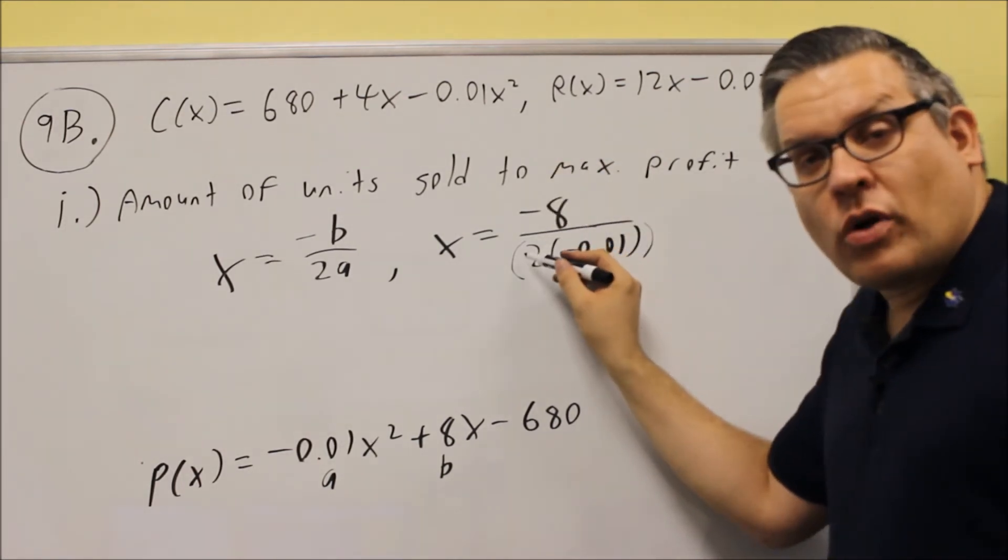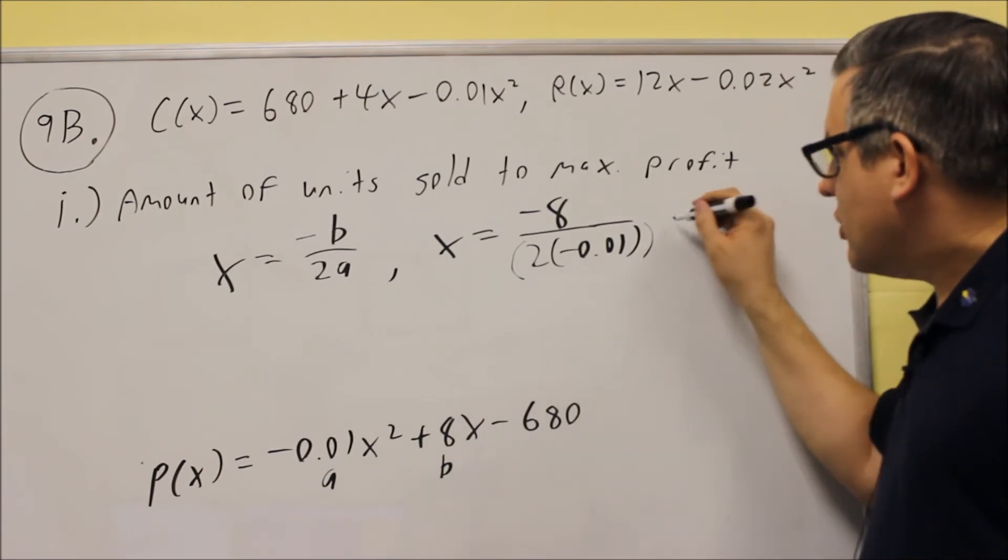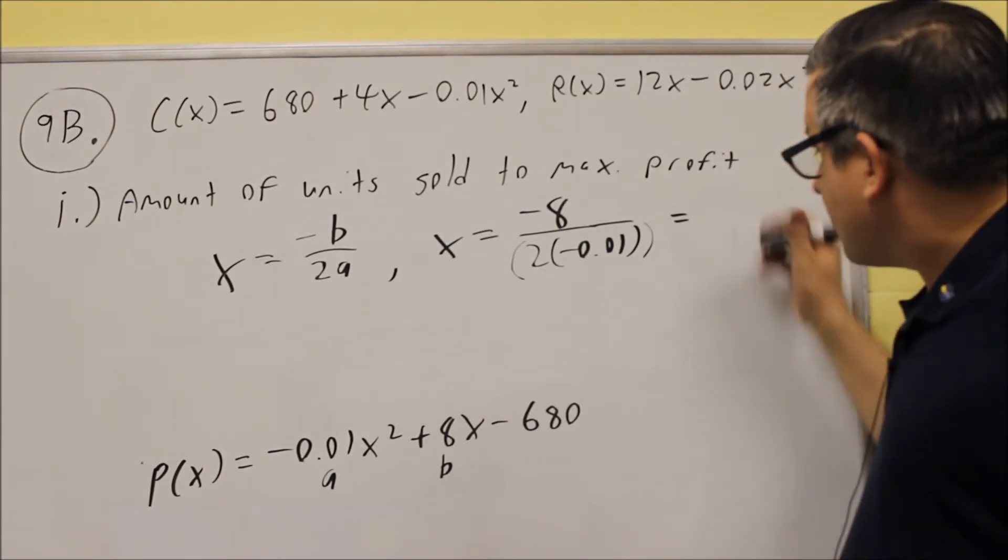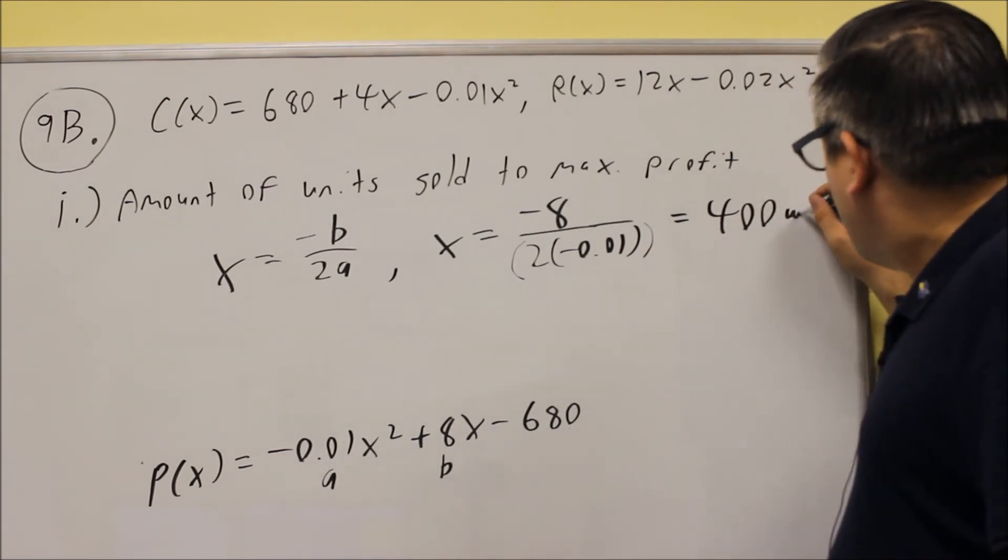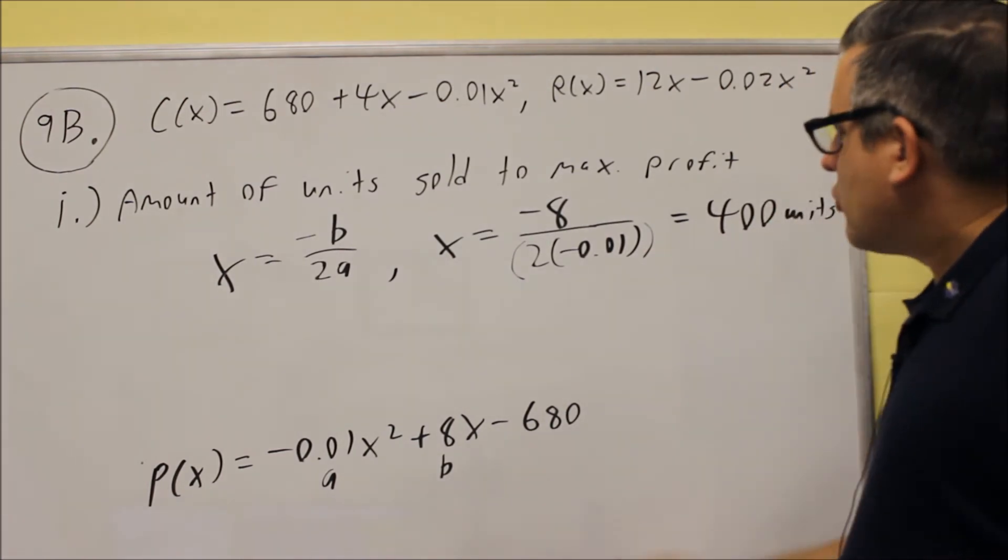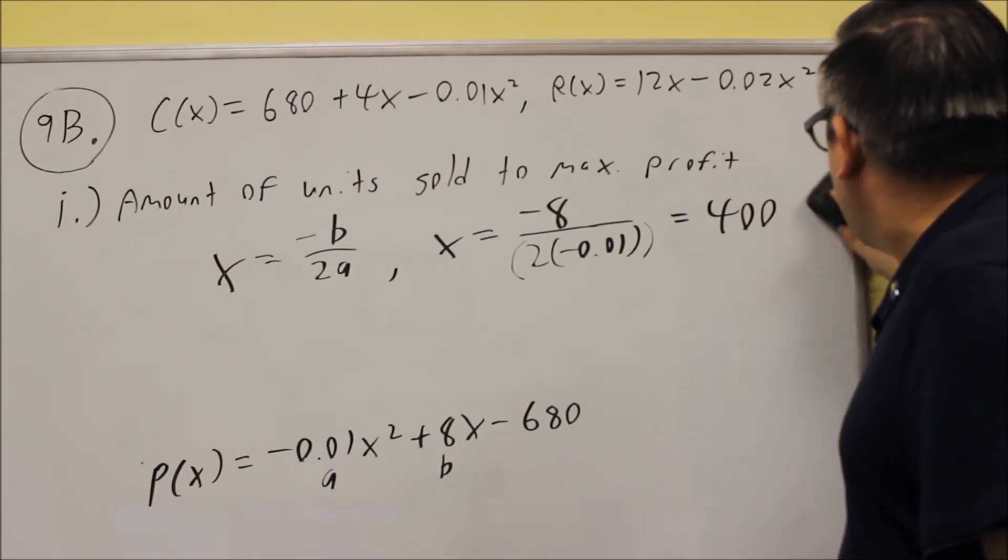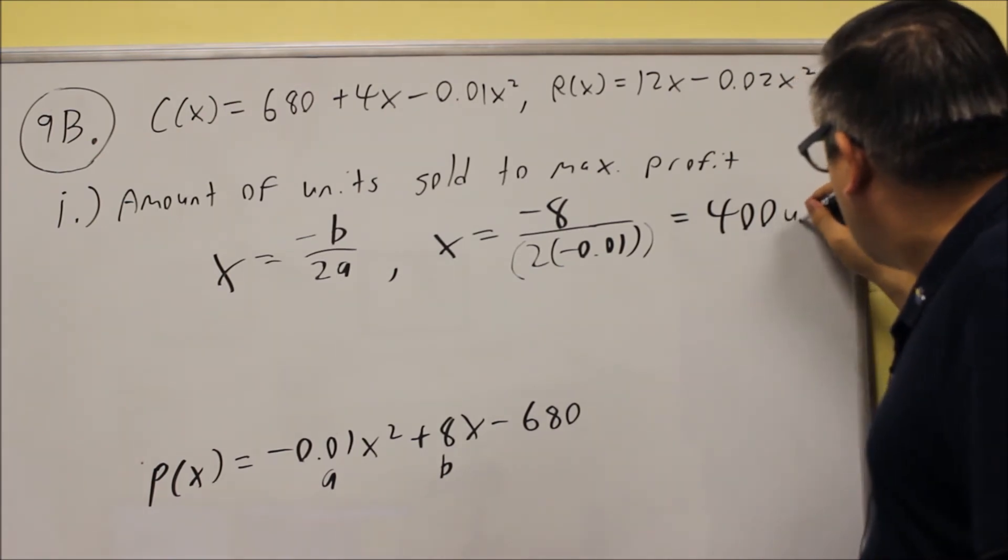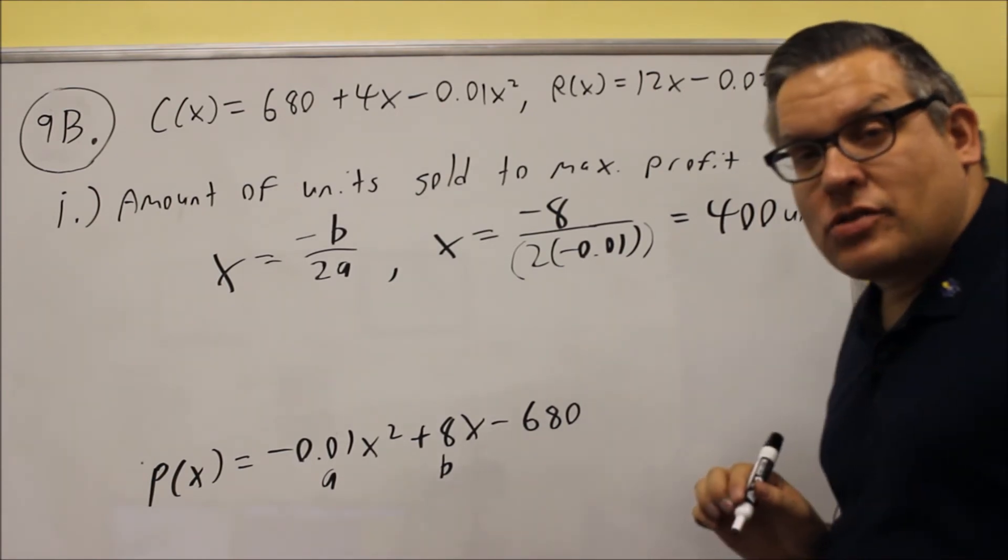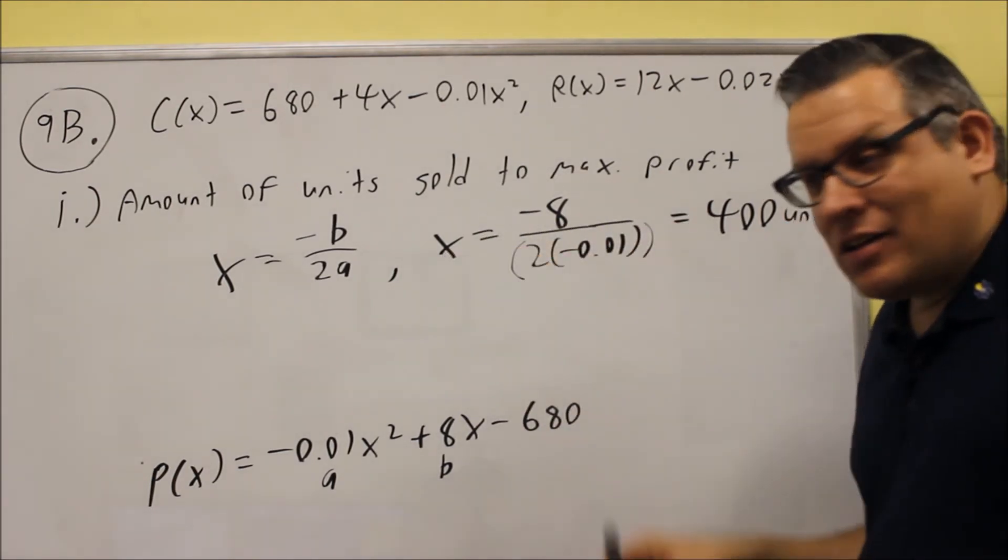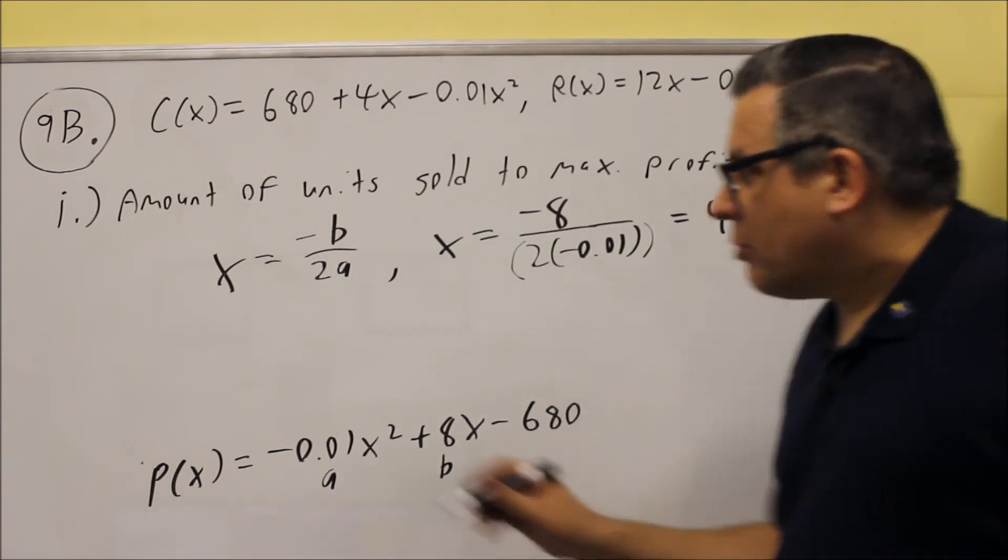But if you're going to do it all in one step, you've got to use those parenthesis. When you put that into the calculator, you should get 400 units. That's what it was asking for originally here, so units should be the answer that we'll put on that. So now that we have that complete, that's part i, so now we want to do double i.